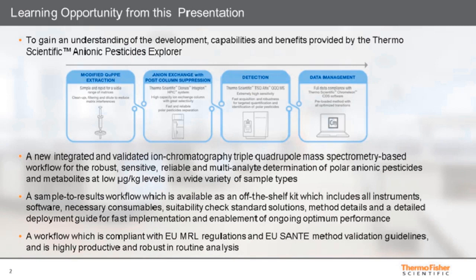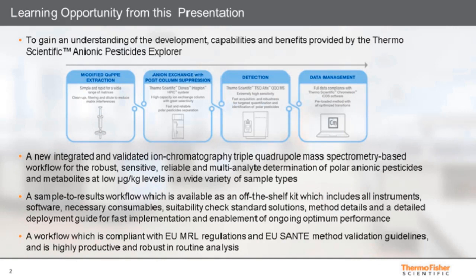The modules are fully integrated and validated to provide robust, sensitive, and reliable multi-analyte determination of polar anionic pesticides and metabolites at low concentration levels in a wide variety of sample types. This workflow is available as an off-the-shelf kit, which includes all instruments, software, and necessary consumables. We also include suitability check standard solutions, method details, and a detailed deployment guide for fast implementation immediately after installation. The workflow provides results in compliance with European MRL regulation and European SANTE method validation guidelines, and is highly productive and robust in routine analysis.